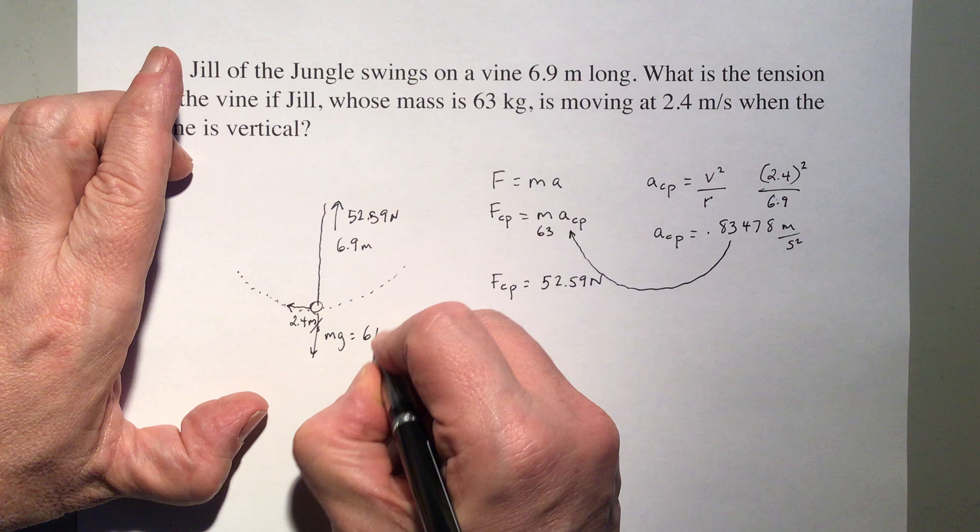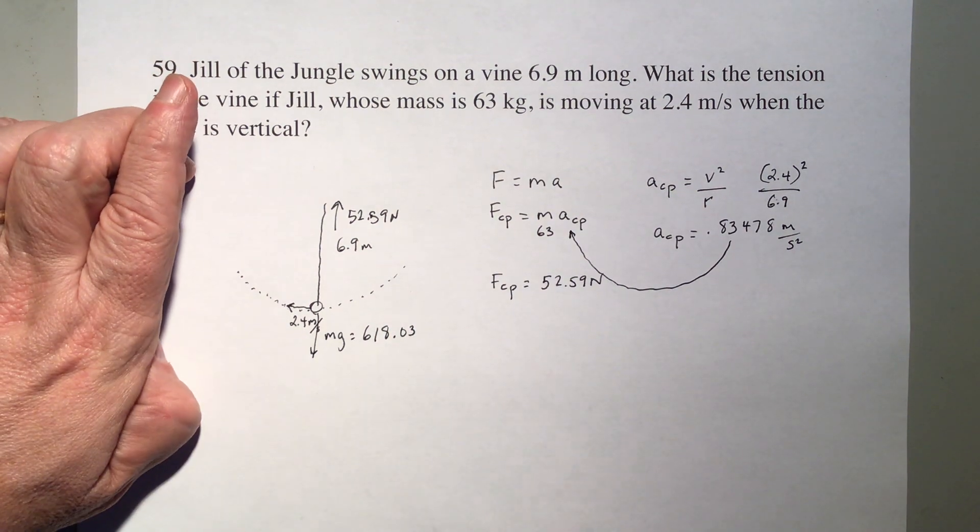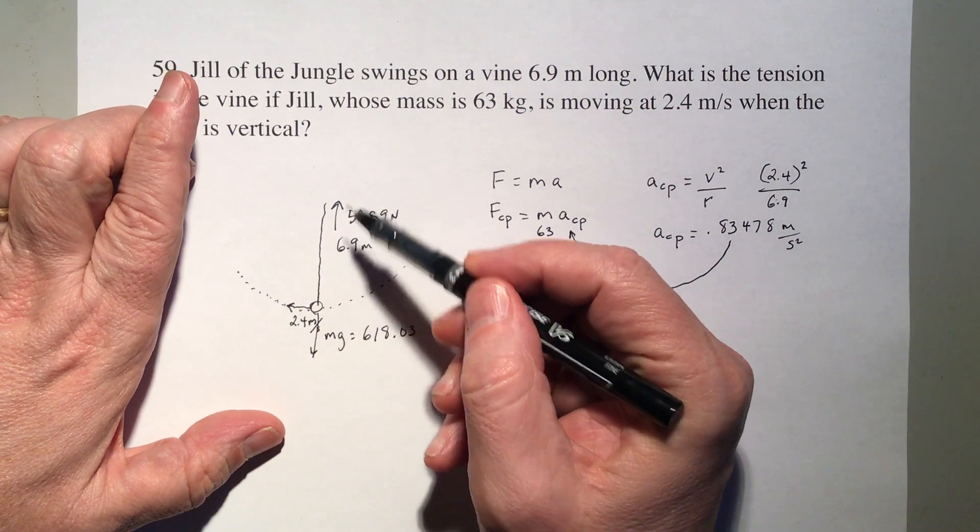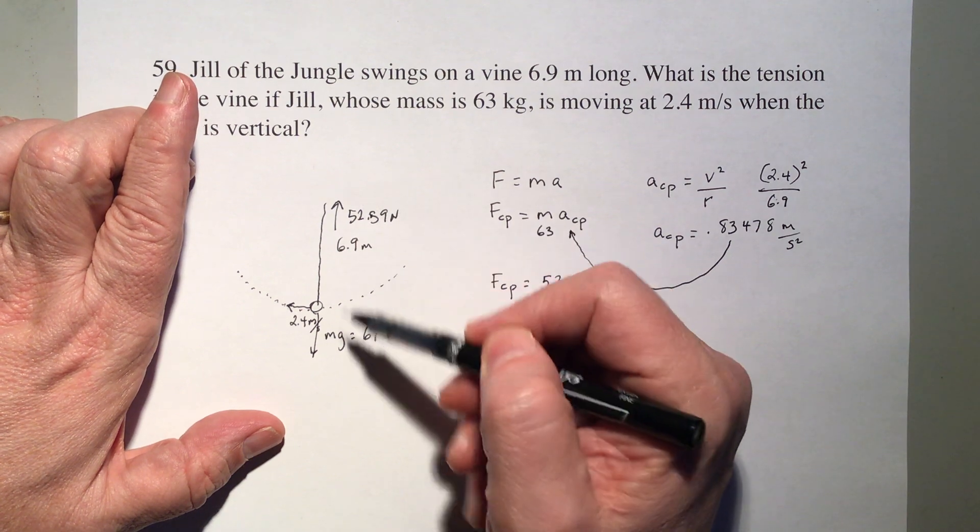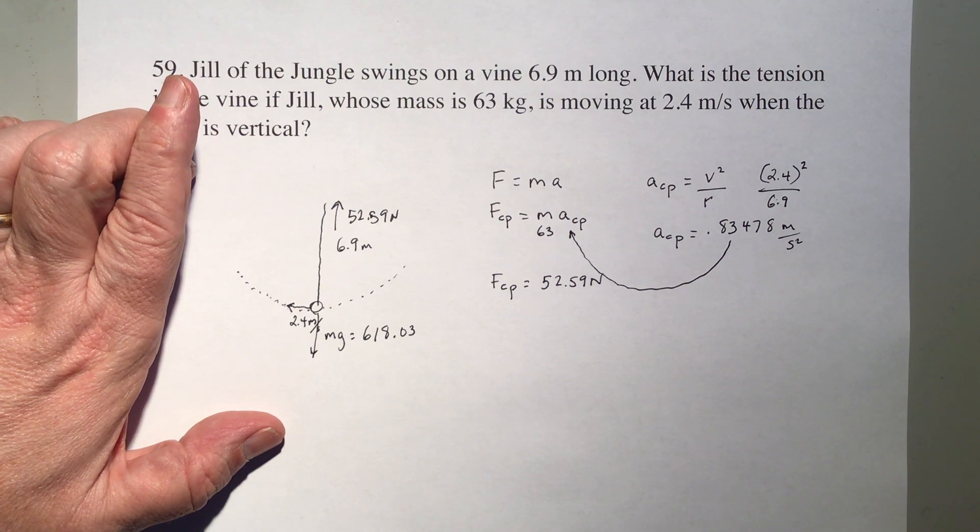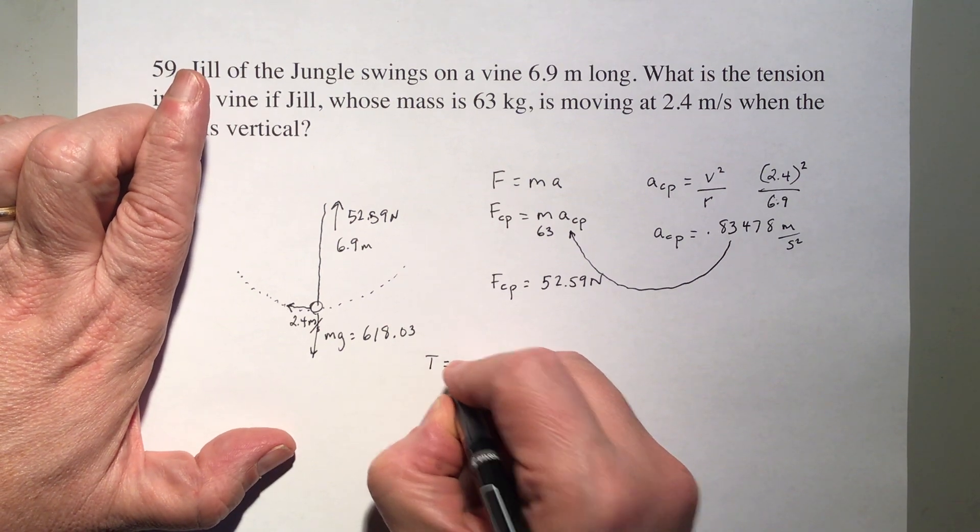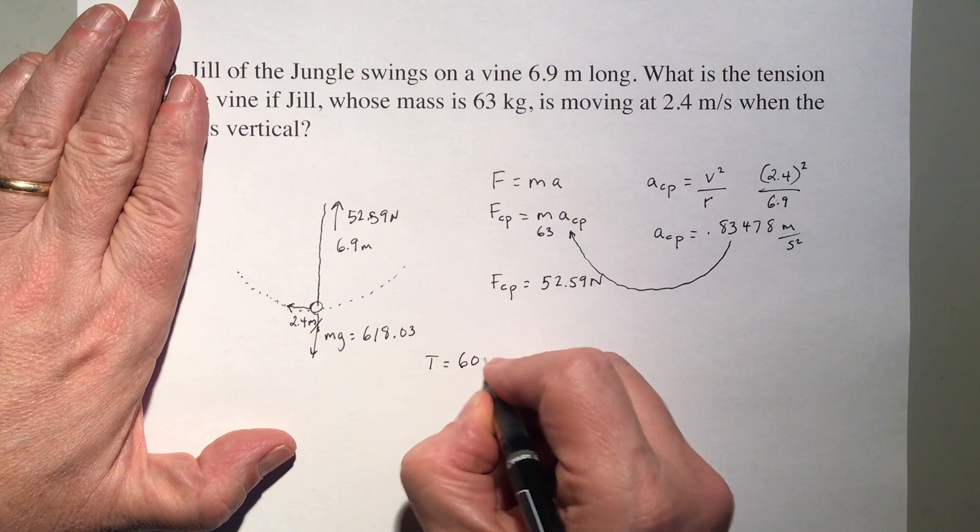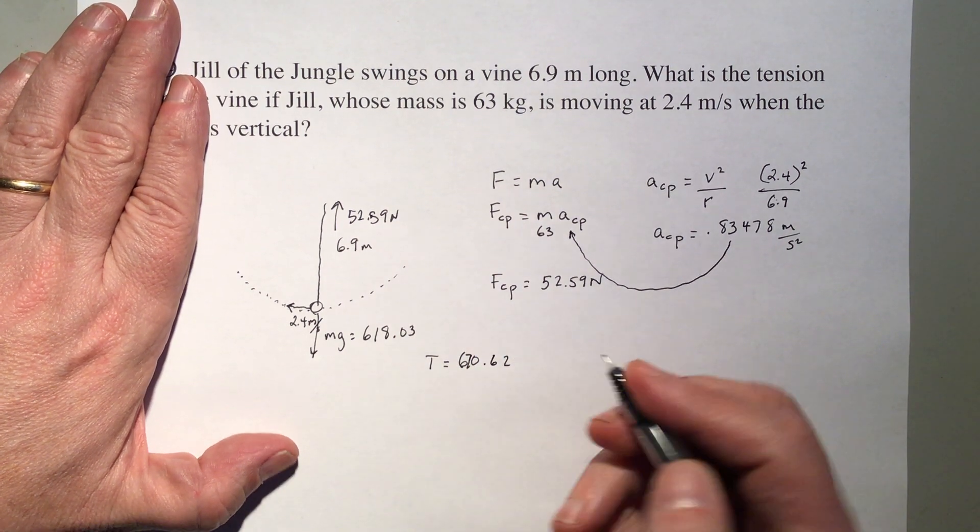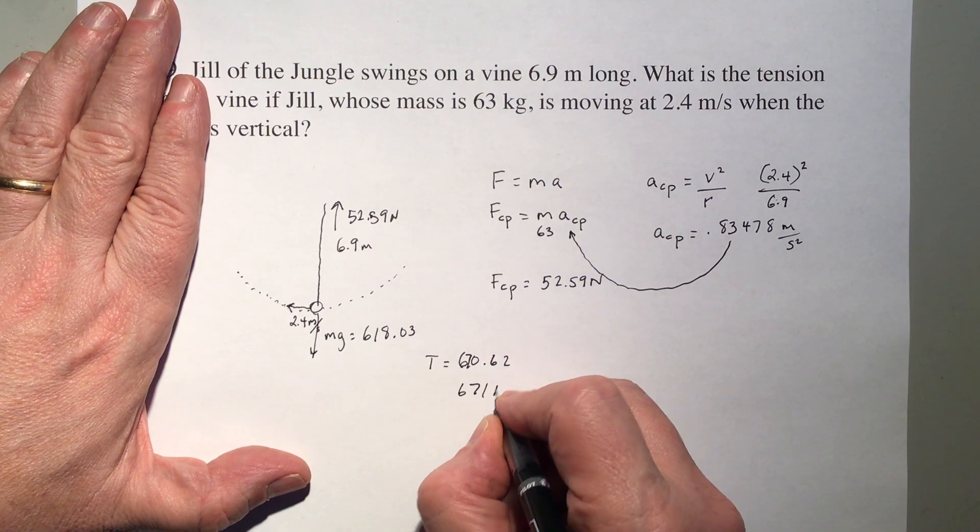So we're trying to find the tension in this vine. The tension is the pull this way plus the pull this way. It's how tight that line is stretched, so we're going to add these two together. And so I have tension or force of tension equals 670.62. So this would be 671 newtons.